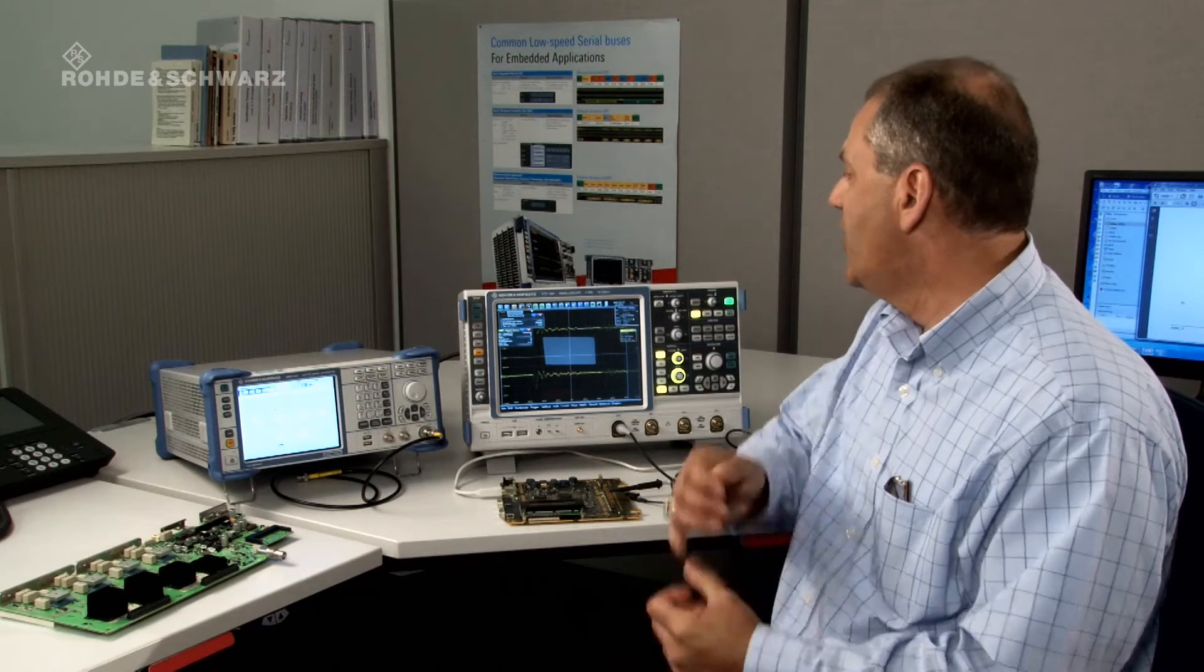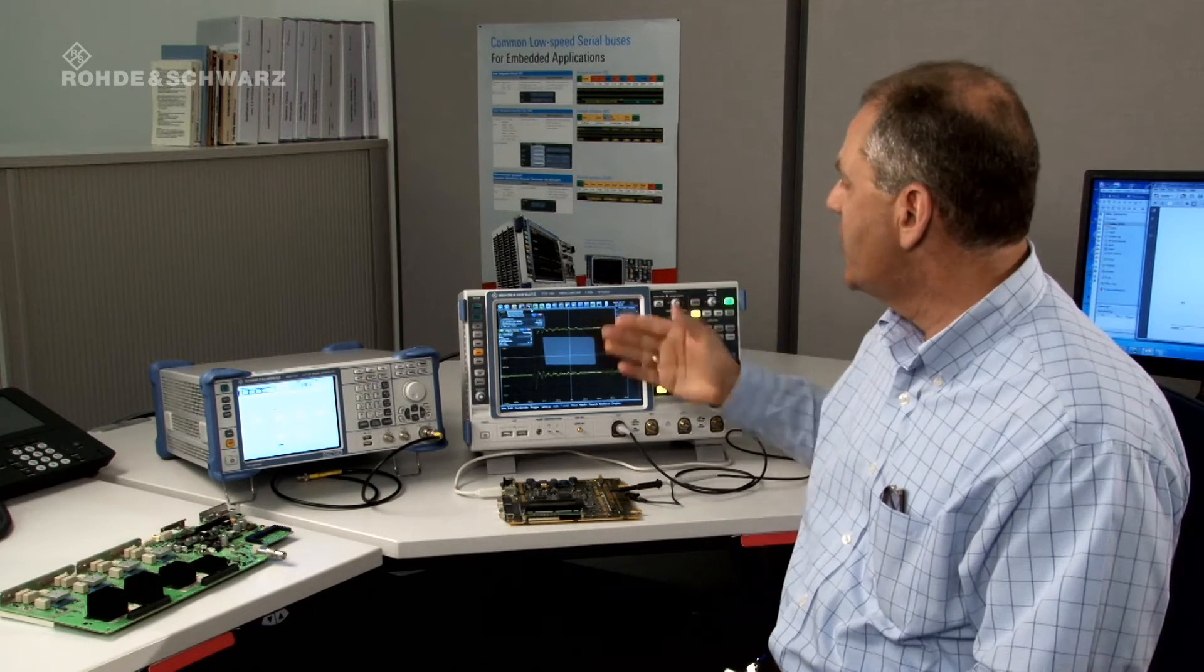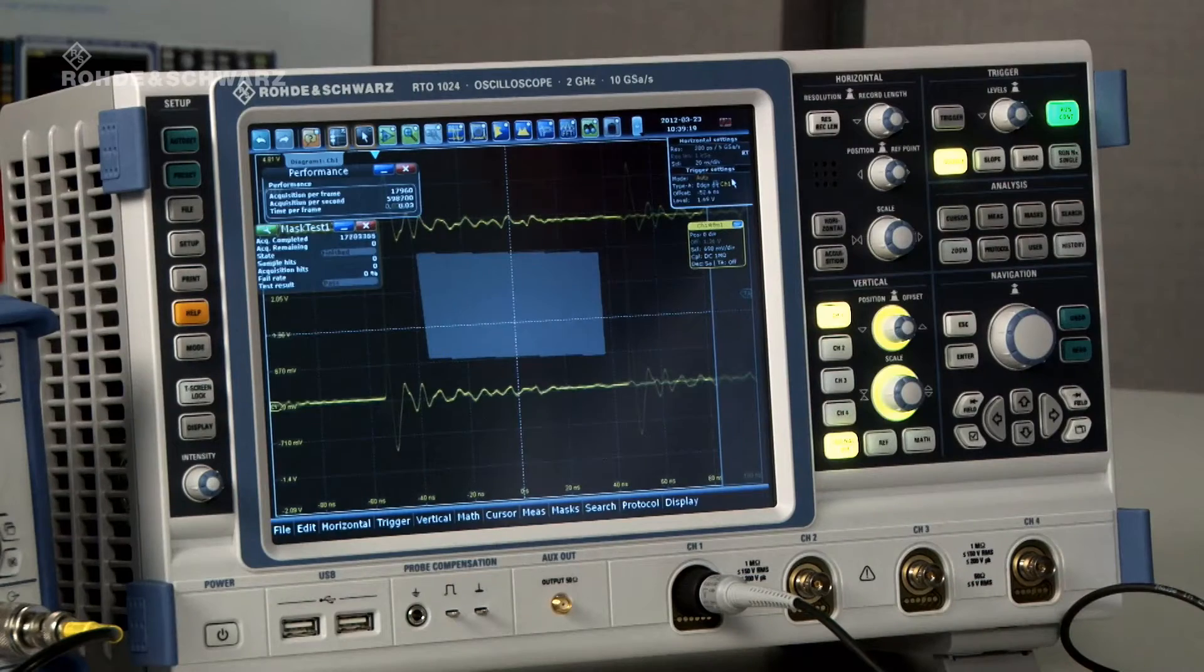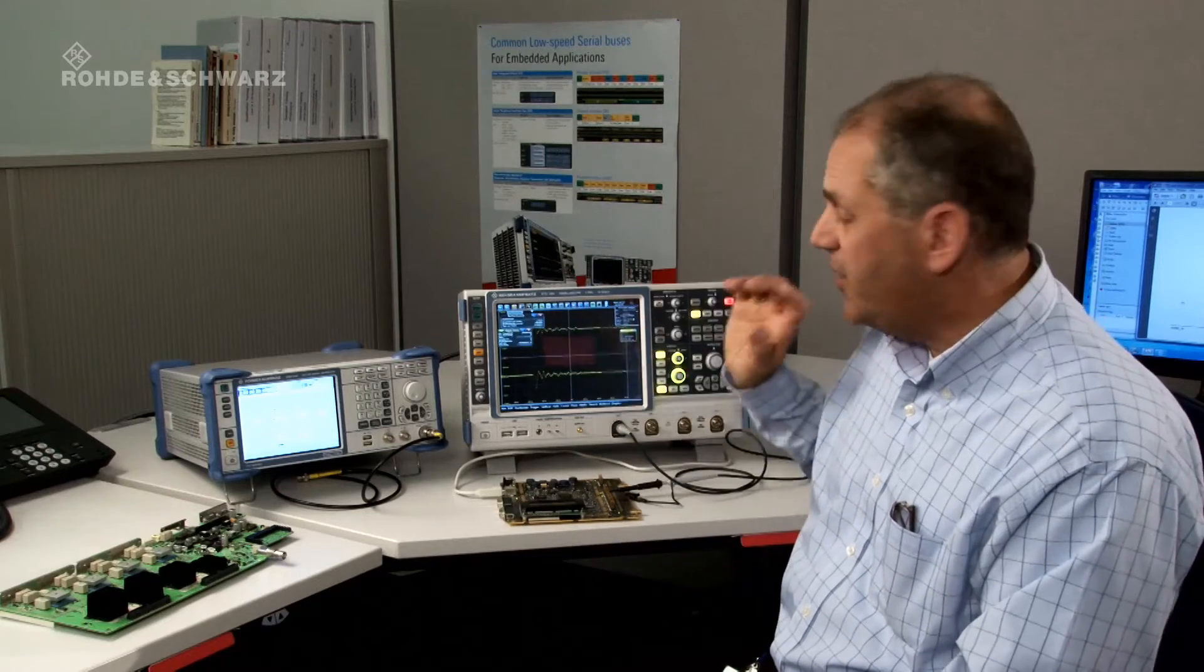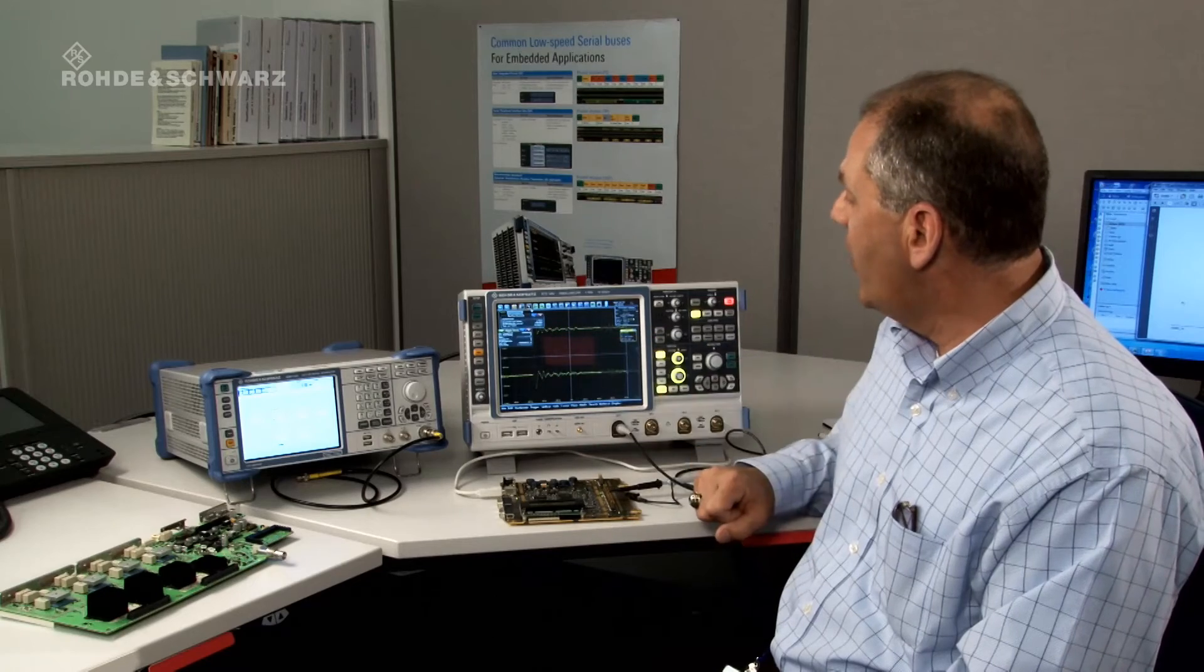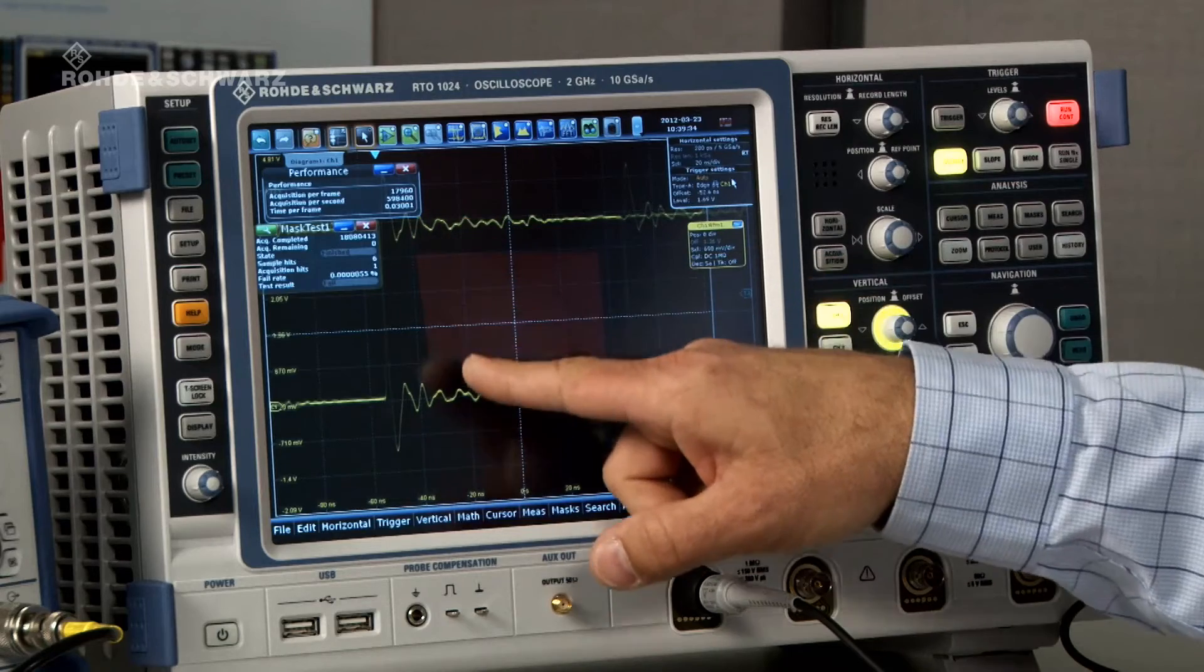Now when it finds a violation, the instrument should stop acquisition and the mask will turn red. There we go. It's taken a little while. So we found an error. The instrument stopped and captured that very rare error. And if you look very closely, you can sort of see the dots in here.